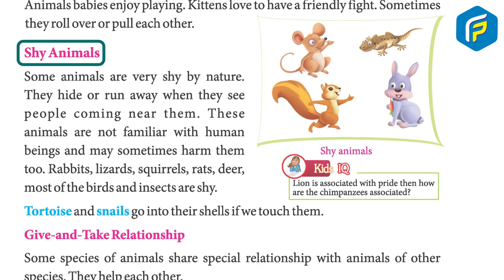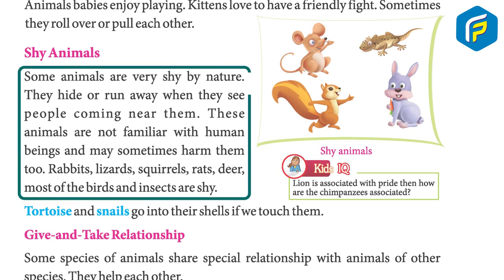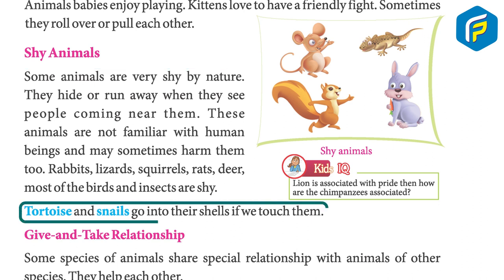Some animals are very shy by nature. They hide or run away when they see people coming near them. These animals are not familiar with human beings and may sometimes harm them too. Rabbits, lizards, squirrels, rats, deer, most birds, and insects are shy. Tortoises and snails go into their shells if we touch them.